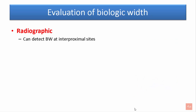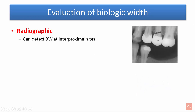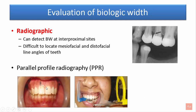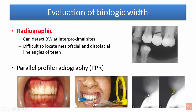Radiographically, biological width can be detected at the interproximal site. This x-ray represents the crest of the alveolar bone and the restorative margins placed closely together, depicting biological width violation. However, it is difficult to locate biological width around the mesiofacial and distofacial line angles of teeth. Hence, a newer technique called parallel profile radiography was introduced, involving placement of gutta-percha points into the sulcus along with a lead foil, and a paralleling technique with films placed laterally. With digital imaging and software, the biological width around the tooth, mainly in the anteriors and facial aspects, can be examined.